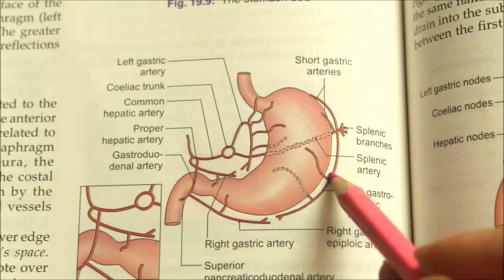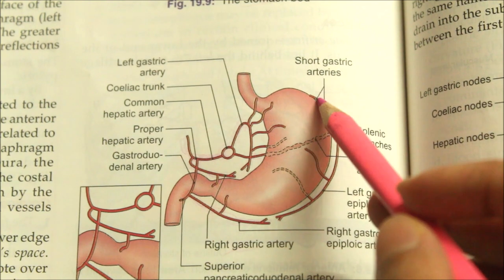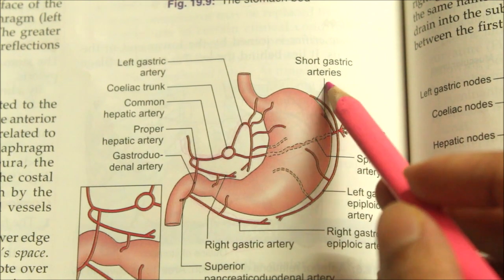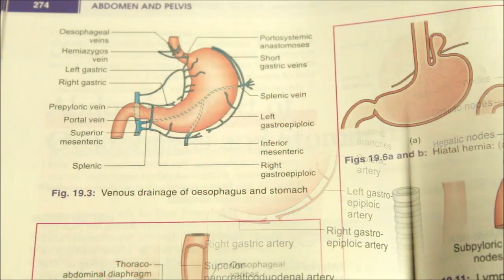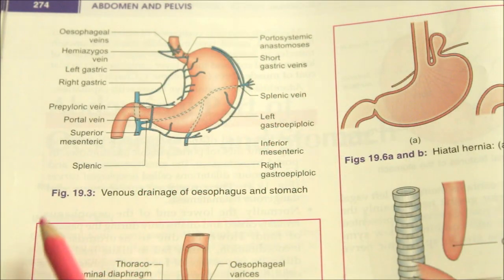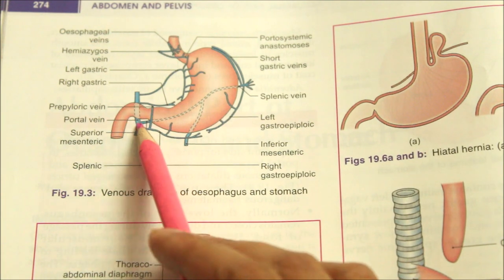The fundus is supplied by five to seven short gastric arteries. The venous drainage of the stomach is by the portal vein, the superior mesenteric vein, and the splenic veins.